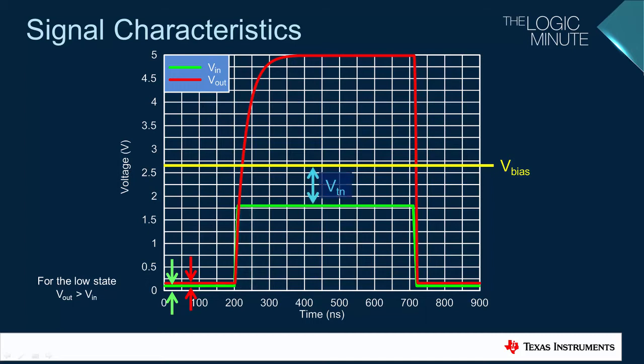As the input approaches the threshold value of the internal FET, it will start to turn off. Once the internal FET of the LSF significantly increases in impedance, the output voltage will become purely controlled by the passive components on the line, namely the pull-up resistor and any parasitic capacitances.